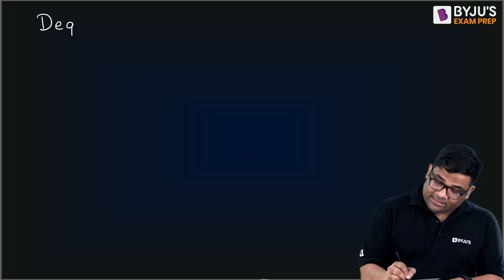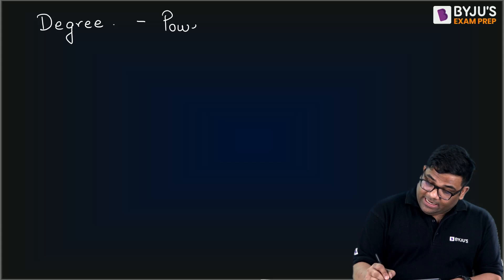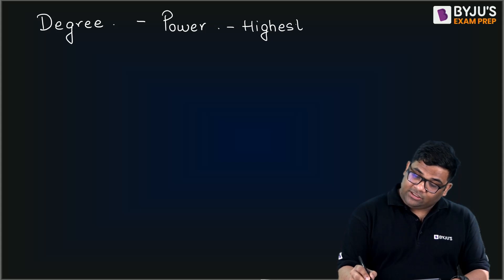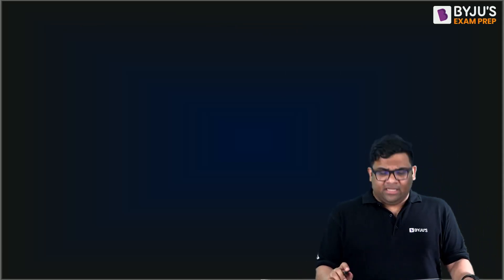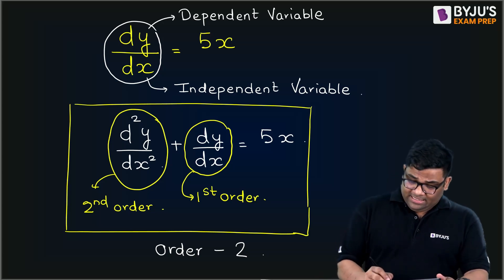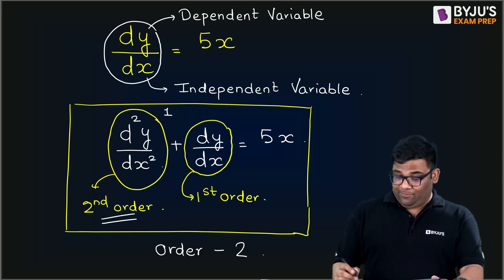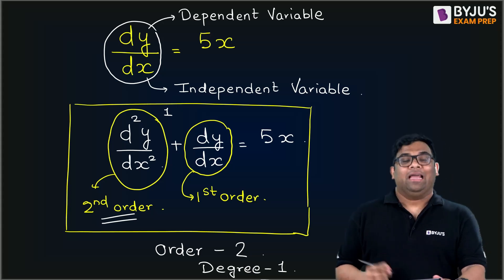Let us take this a little further. What is degree? Degree is the power associated with the highest order. In this differential equation, the highest order term is the second derivative, and the power of that term is 1. Therefore, the degree is 1.